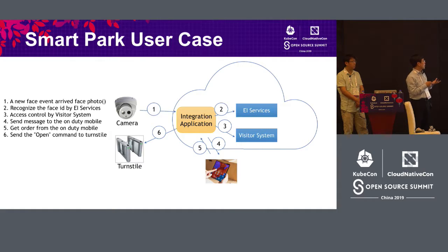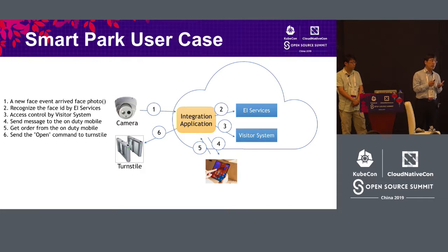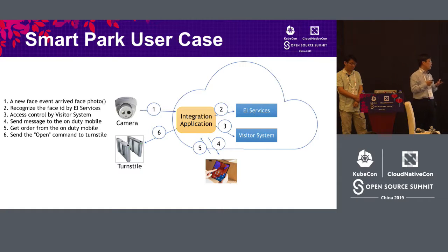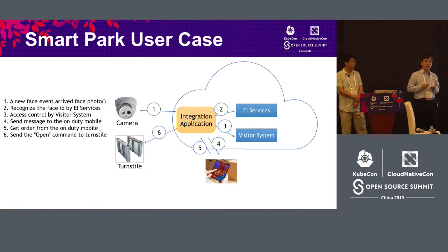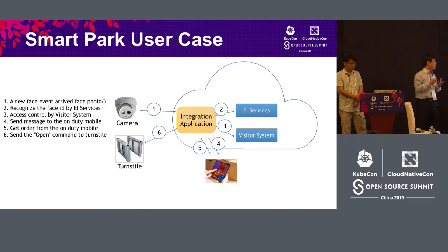We can also use this system to tell customer service that your VIP client has arrived, and tell the manager of the turnstile system when to open and close it. We have already seen a lot of scenarios like this. After the camera catches a face, the information or message is sent to the integration app, the face is recognized, and the visitor system determines whether it is a VIP, a regular visitor, or a threat. Then it tells the receptionist to receive VIPs from the front desk and instructs the turnstile to open or stop. This is the detailed solution of the smart park, combining all systems into an integration app.